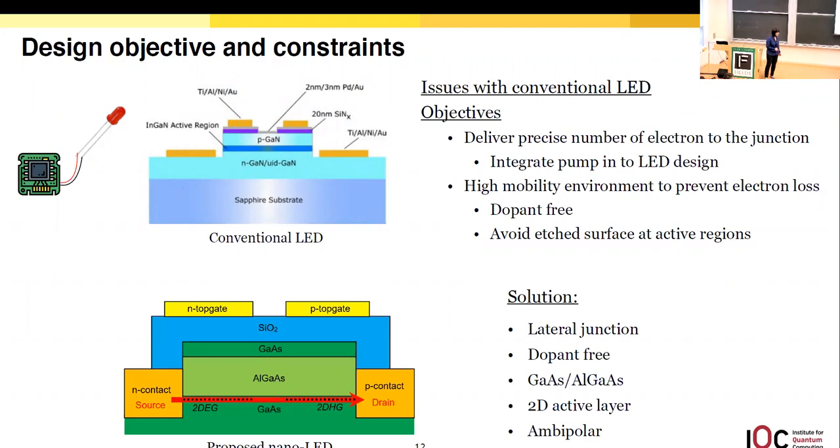Here is the design we came up with. It's based on a lateral junction in GaAs/AlGaAs systems, the same material we use for our pump. In here, the electrons will only need to travel in this intrinsic, uniform, and high mobility layer to reach the junction. Another added benefit of the dopant-free is we could have ambipolar operation. What does ambipolar mean? It means you could switch the source and drain on the fly by simply switching voltages. This seemingly freebie turns out to be a very important feature to our design, which I will explain later.